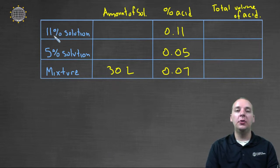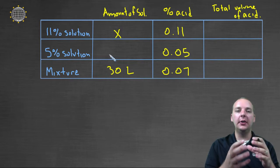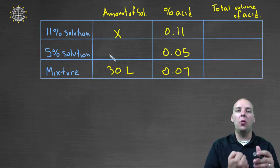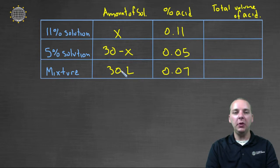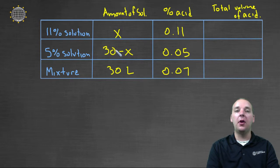If we don't know how much is part of the eleven percent solution, we'll call it x. Think about this intuitively: I don't know the total volume of the five percent solution, but I do know it's whatever thirty liters minus x is. Part of the total is spent on the eleven percent solution, so whatever remains is the volume of the five percent solution — thirty minus x. If x were ten, the five percent solution would be twenty, and they'd add up to thirty.